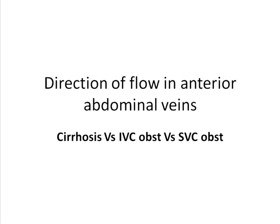When we see prominent anterior abdominal veins, which are large enough to check the direction of flow, it may be clinically possible to differentiate cirrhosis, inferior vena cava obstruction, and superior vena cava obstruction.